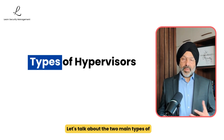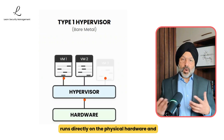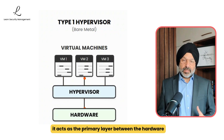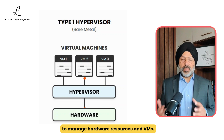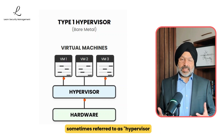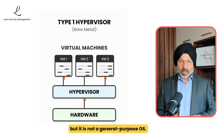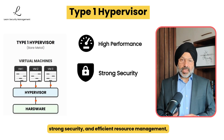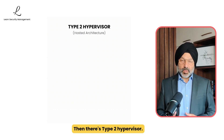There are two main types of hypervisors. A type 1 hypervisor, also known as a bare metal hypervisor, runs directly on the physical hardware and does not require a traditional operating system underneath. Instead, it acts as the primary layer between the hardware and the virtual machines, providing its own minimal operating environment — sometimes referred to as a hypervisor kernel or microkernel — but it is not a general purpose OS. Because it interacts directly with hardware, a type 1 hypervisor delivers high performance, strong security, and efficient resource management, making it ideal for enterprise and cloud environments.